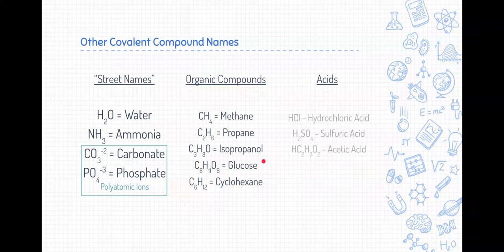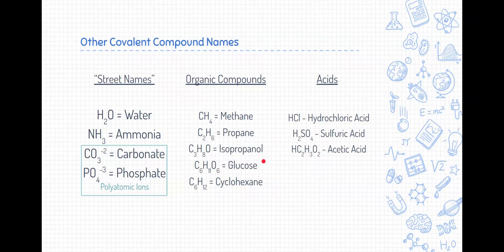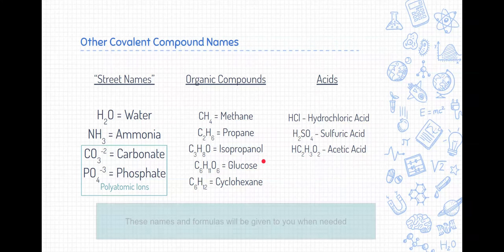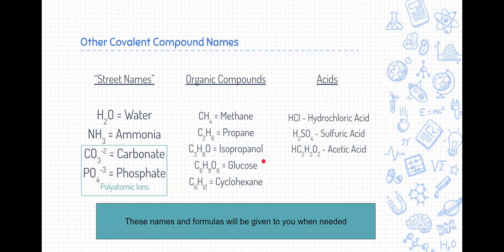The last one is acids. Here's some examples like hydrochloric acid, sulfuric acid, and acetic acid. These are all acids that start with hydrogen and are just combinations of hydrogen and multiple different non-metal elements. These acids are covalent compounds themselves, but they have their own specialized names and their own specialized naming system. By the way, these names and formulas will be given to you when needed. These aren't the things you need to memorize. Stick with those simple binary covalent compounds where you use the prefix, and you'll be fine. These ones will be given to you when you need them.